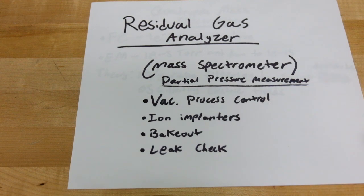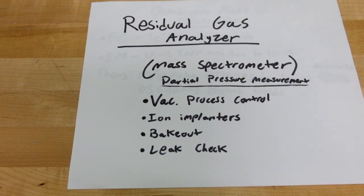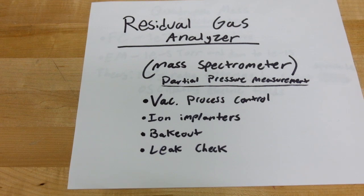That's extremely useful for all vacuum process control applications. For doing a bakeout, you can see how much water vapor you have left in the chamber. For leak checking, you can see the different hydrocarbon compositions. So if you have oil backstreaming from your pump, that'll be really easy to see on the RGA. It's really good for knowing if you need to put a cold trap or something like that. It's a really useful tool, and you can also do some other experiments — I'm going to be trying some stuff soon with heating up different plastics in vacuum and looking at their decomposition on the RGA to try to identify them.